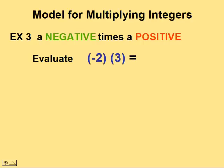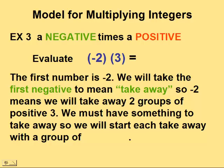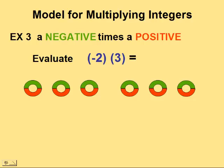In our third example, we'll multiply a negative number times a positive number: negative two times three. To extend our model, negative two means we will take away two groups of positive three. In order to take something away, we must have something to take from, so we will start with a group of zeros. Two times three is six, so we'll start this question with six zeros.